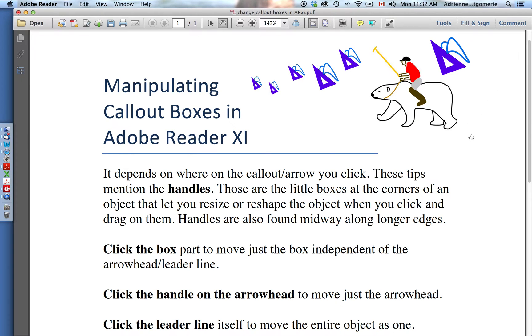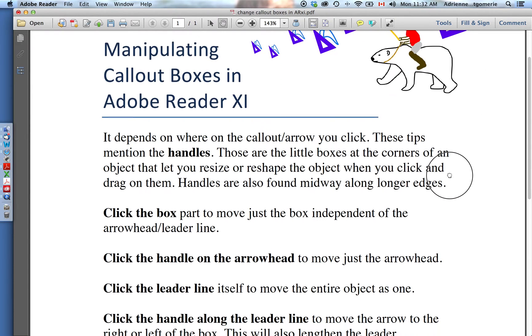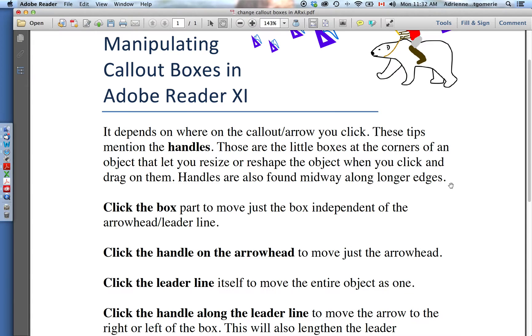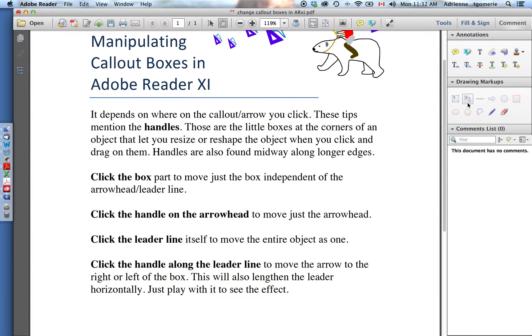This demo will show you how to make and manipulate callout boxes in Adobe Reader XI. To get there, open Adobe Reader itself, not in a browser, click the comments panel, and under drawing markups click add text callout.